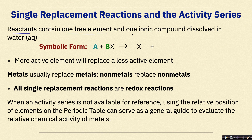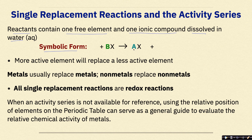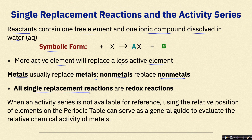Single replacement reactions in the activity series. Reactants contain one free element and one ionic compound dissolved in water. In symbolic form, lone element A is with ionic compound BX. A is more active than B. When A interacts with BX, A is going to take the place of B, so A becomes the new product, and B is pushed out by itself. The more active element will replace a less active element. Metals typically replace metals, and non-metals replace non-metals. All single replacement reactions are redox reactions.